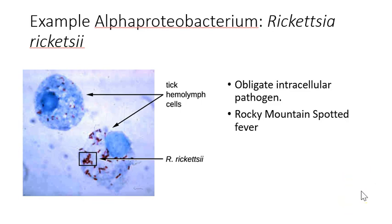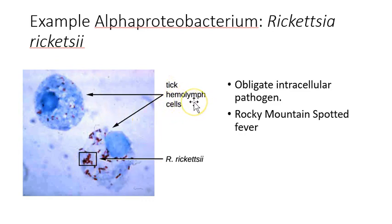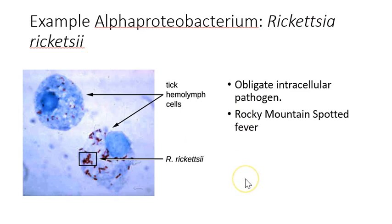An example of an alpha proteobacterium is Rickettsia rickettsii, an obligate intracellular pathogen — it must live inside other cells. Here it is shown inside tick hemolymph cells. When a tick bites you, especially in the Rocky Mountain region, you can be infected with Rickettsia rickettsii through that bite. It moves into human cells and causes Rocky Mountain spotted fever, a nasty tick-borne illness that can be treated with antibiotics but is somewhat tricky to clear.